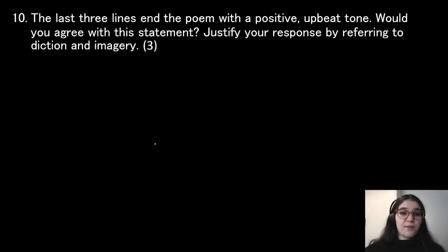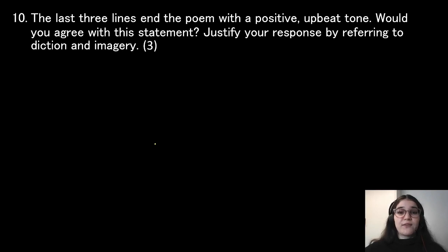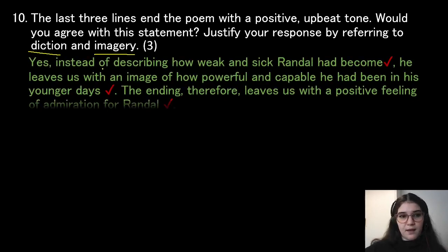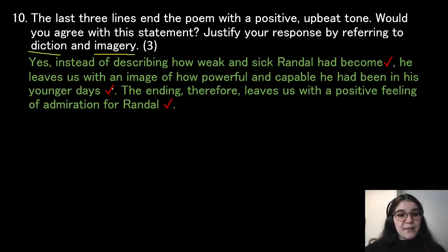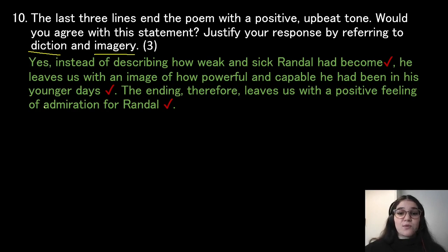The last three lines end the poem with a positive upbeat tone — would you agree? You must justify by referring to diction and imagery. Yes — instead of describing how weak and sick Randall had become, the poet leaves us with an image of how powerful and capable he had been in his younger days. The ending therefore leaves us with a positive feeling of admiration for Randall.